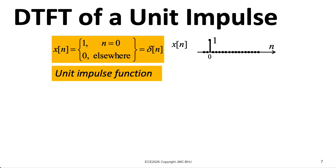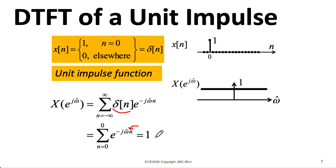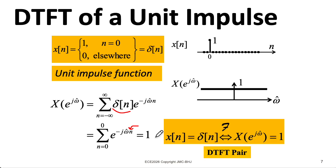As a simple example, let's take the DTFT of a unit impulse. Plugging it into our formula, delta of n only turns on at n equals 0. So plugging in 0 for n, that's the only term we have — e to the 0 equals 1. So the unit impulse has a transform that's just a constant 1 across all frequencies. Thus we have our first discrete-time Fourier transform pair. This isn't surprising — we earlier saw that the frequency response of a system with an impulse response of a delta was just 1.